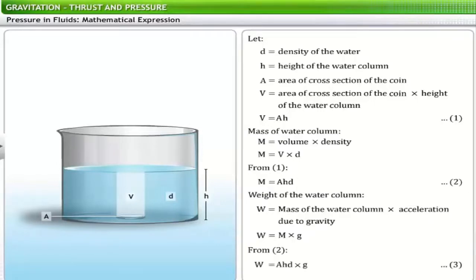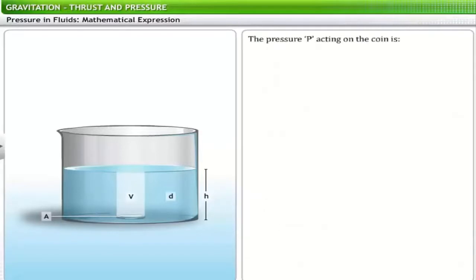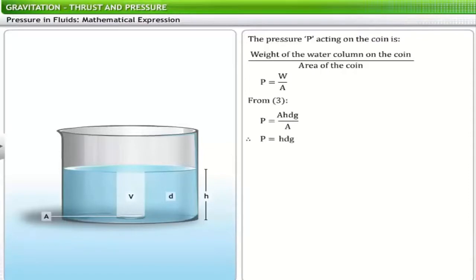Weight of the water column acts normally on the object. Thus, the pressure P acting on the coin is the ratio of weight of the water column to the area of the coin. That is, P is equal to W divided by A. From equation 3, we know W is equal to product of A, H, D and G. This gives the expression of fluid pressure, P. P is equal to H, D, G.